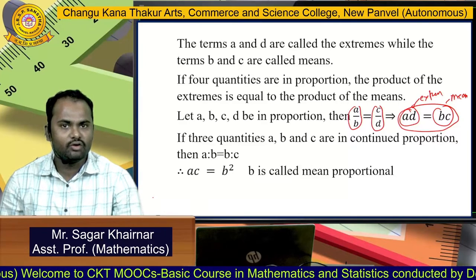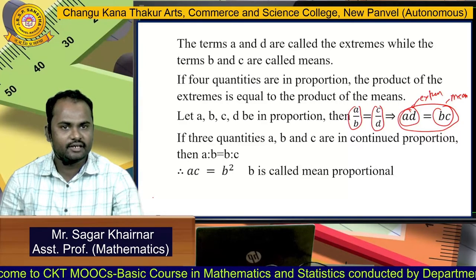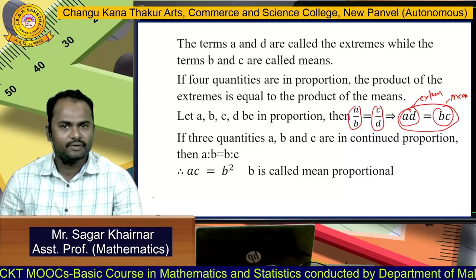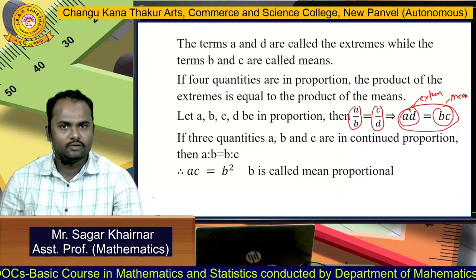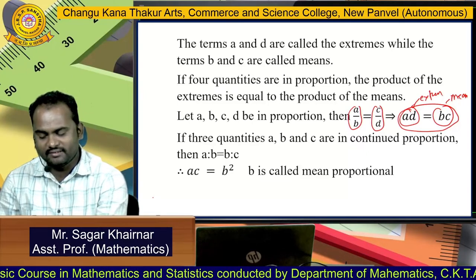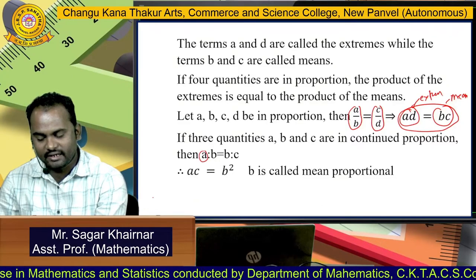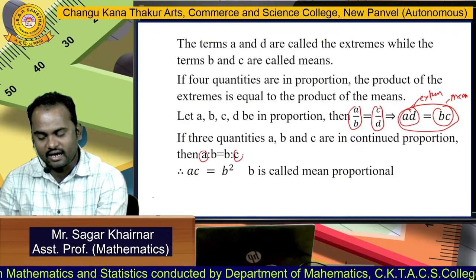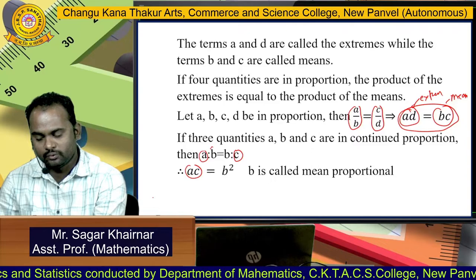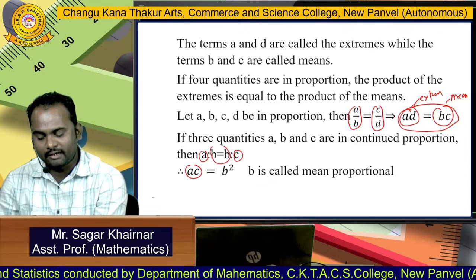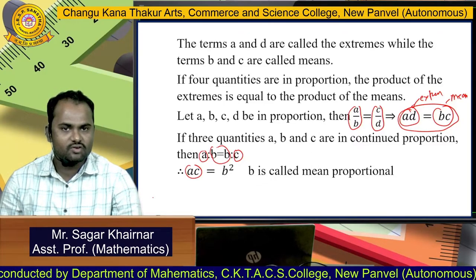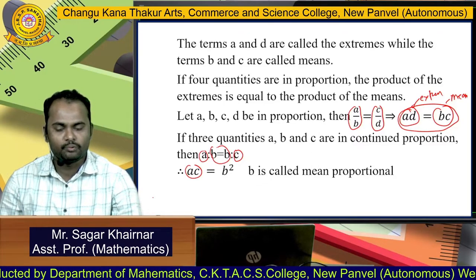If three quantities A, B, C are in continued proportion, then we can write A:B = B:C. That means the product of the extremes A × C equals the mean squared, i.e., B², where B is called the mean proportional.